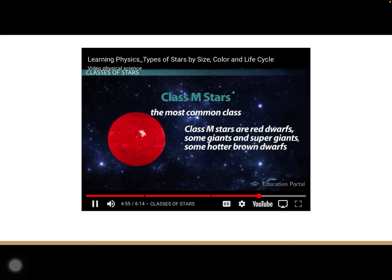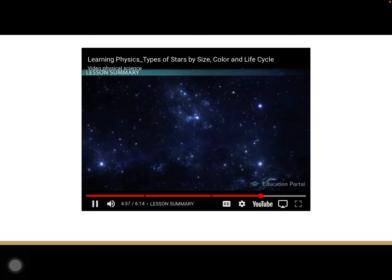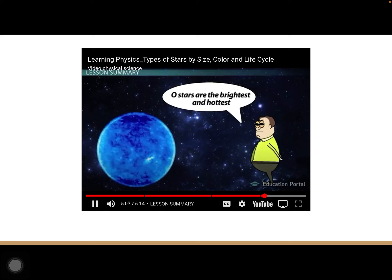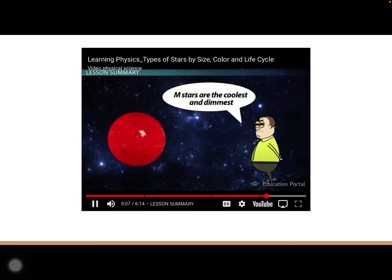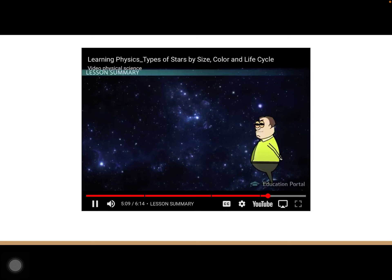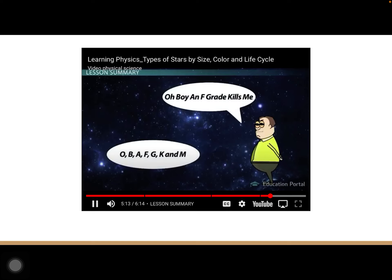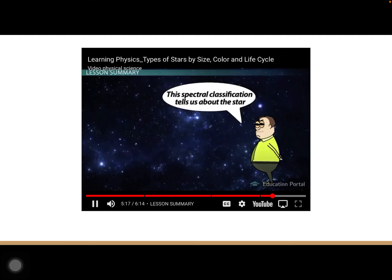Along with some hotter brown dwarfs, scientists classify stars by color and temperature into seven categories. The O stars are the brightest and hottest, and the M stars are the coolest and dimmest. The easiest way to remember the categories in order is with the mnemonic 'Oh Boy, An F Grade Kills Me.' This spectral classification tells scientists a lot about a star, including its approximate size, type, age, and distance.